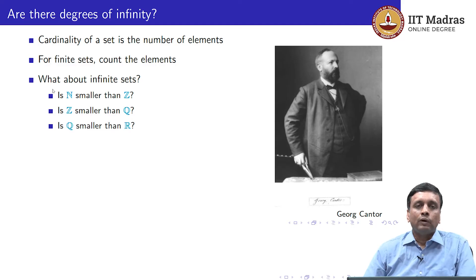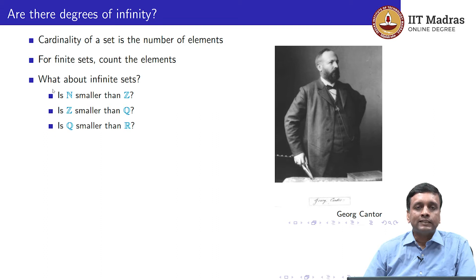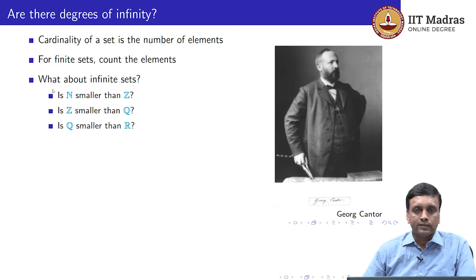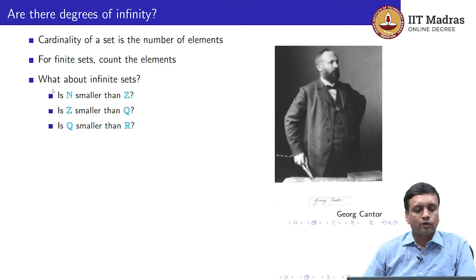And finally, when we move from rationals to real numbers, we added a whole bunch of irrational numbers which cannot be expressed in the form p/q. So clearly the real numbers have a large number of new things which are not in the rationals. So again, is the set of reals larger than the set of rationals or not?